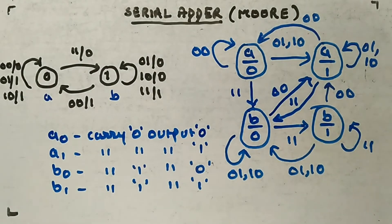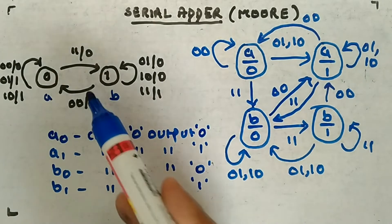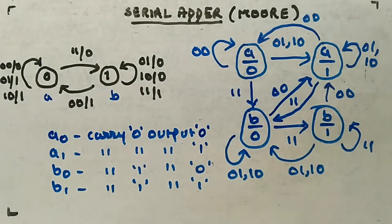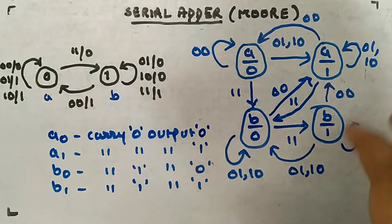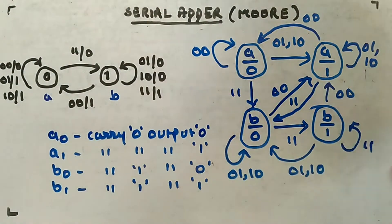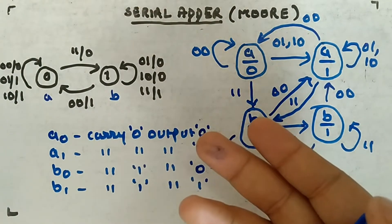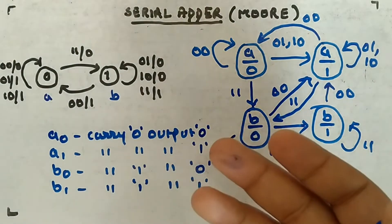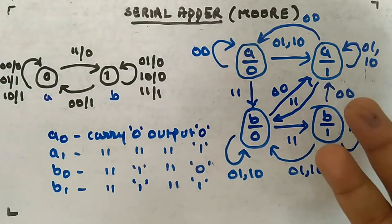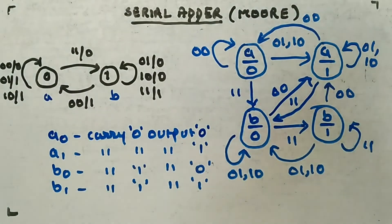You can see the states have been increased by double. You had two states in the Mealy machine and now you have four states here in the Moore machine. That's why you don't prefer the Moore type of machine — it creates more complexity. Now you have the state diagram. Let's make the state table. The procedure is: make the state table, reduce it if possible, then make the excitation table, then derive minimization expressions, and then design the circuit.